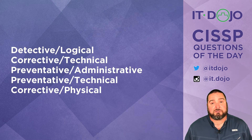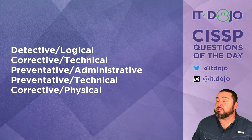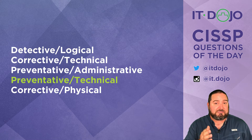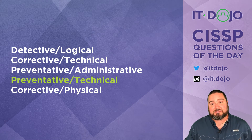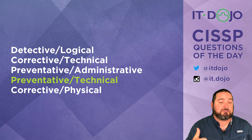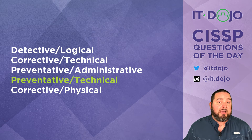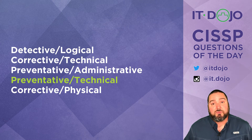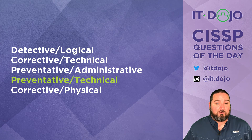The best answer we're looking for here is that a network firewall is a preventive technical control. It's a preventive control because it stops things from occurring at the moment somebody attempts to do them — so as a packet is trying to pass through the firewall, if the rules don't allow it, the firewall prevents that from occurring. And because it is a technical — or sometimes called a logical — control, it's a mechanism we implement with technology. So firewalls are definitively preventive technical controls.